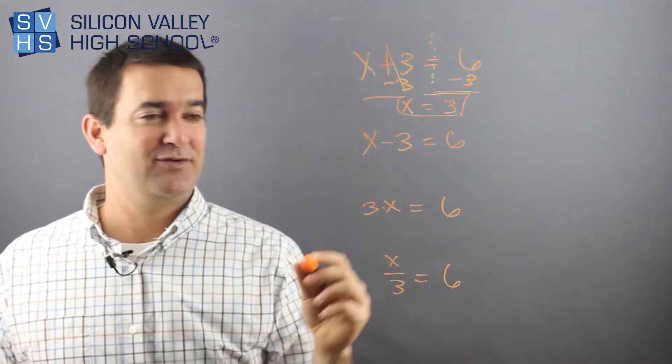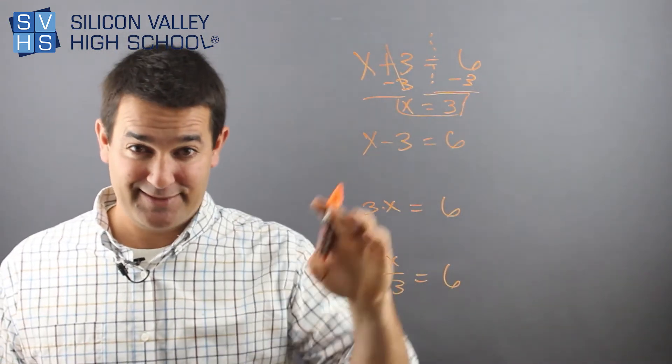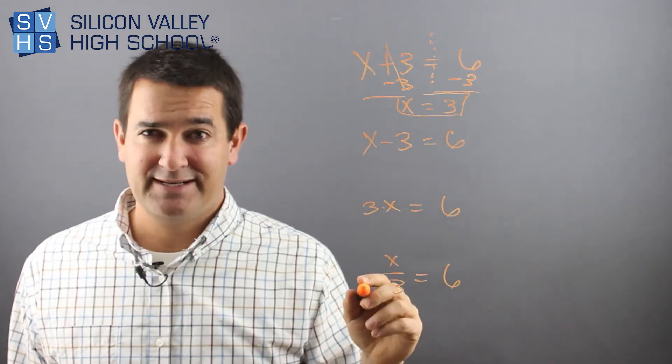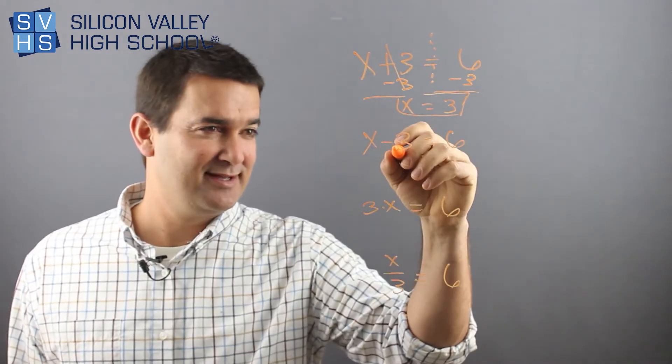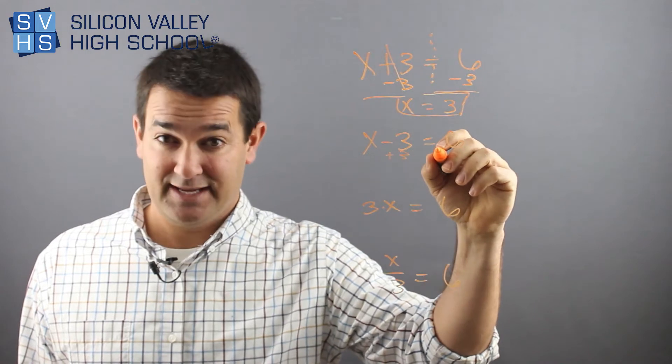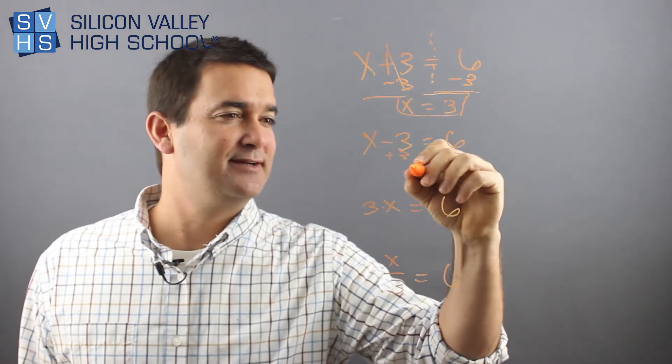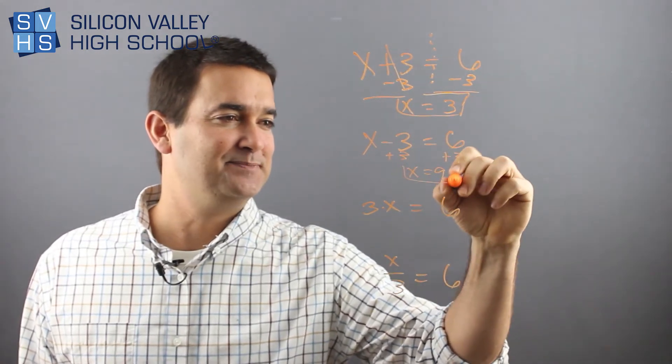Now you kind of get where I'm going. What's the opposite of minus three? The opposite of minus three is plus three to both sides of the equals. So you have plus three here. You got x equals nine. Done.